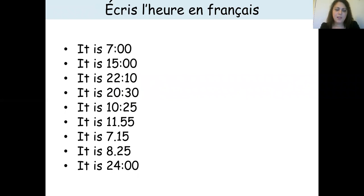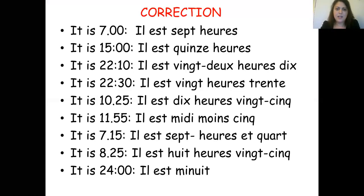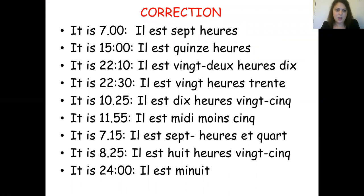Now I would like you to write the times in English first — so 'it is seven', 'it is 15:00', etc. — and write down the term in French. So: 'il est sept heures'; 'il est quinze heures'; 'il est vingt-deux heures dix'; 'il est vingt-deux heures trente'; 'il est dix heures vingt-cinq'; 'il est midi moins cinq'; 'il est sept heures et quart'; 'il est huit heures vingt-cinq'; 'il est minuit'. Give yourself a score again.